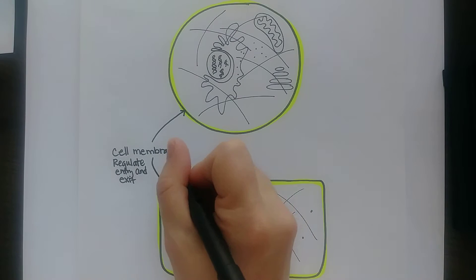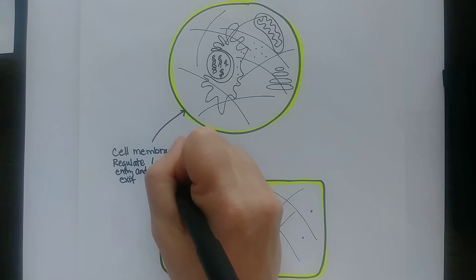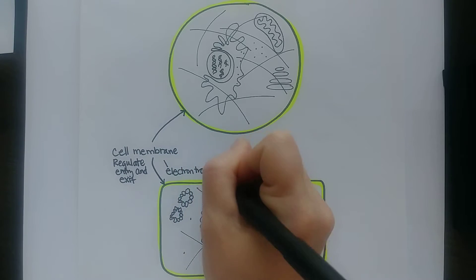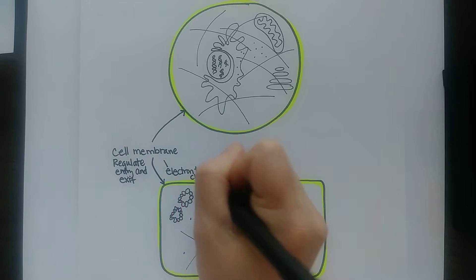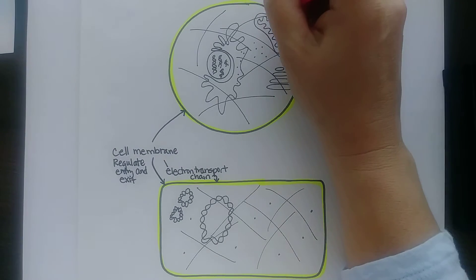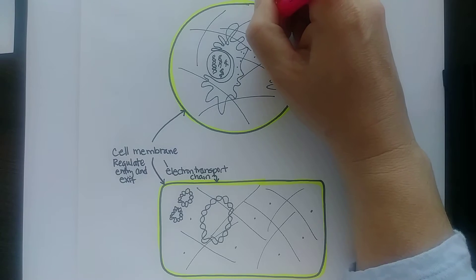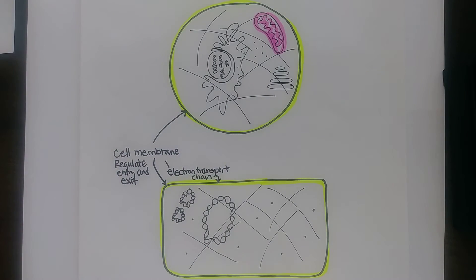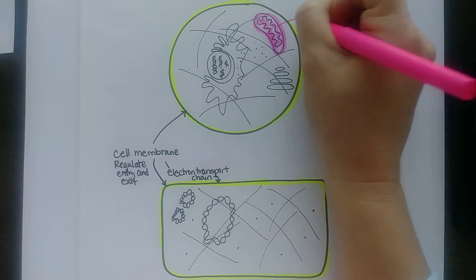In prokaryotes, the cell membrane has the electron transport chain if they are able to do oxidative phosphorylation — that's the last part of cellular respiration. As opposed to eukaryotes, which have a mitochondria that has an electron transport chain. So eukaryotes have a membrane-bound organelle called a mitochondria.